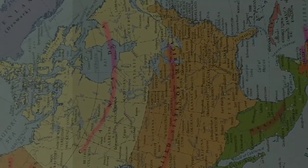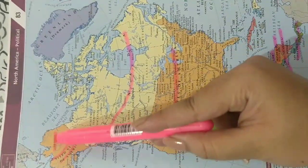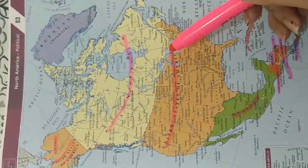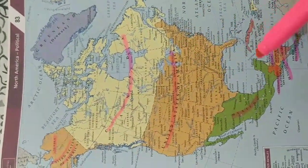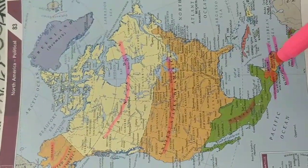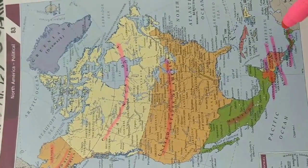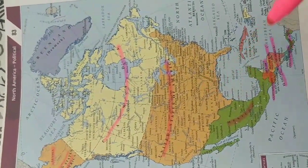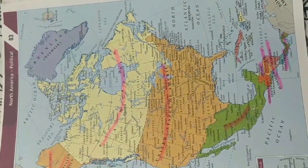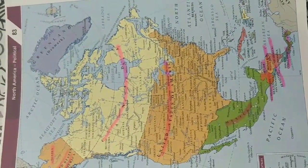Moving forward, the countries on this map are: Alaska, Canada, United States of America, Mexico, Belize, Guatemala, Honduras, El Salvador, Nicaragua, Costa Rica, Panama. The Panama city joins North America with South America. Thank you so much — please subscribe, share, and like the video.